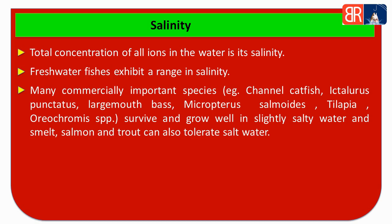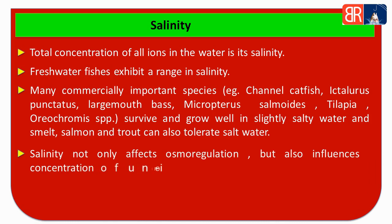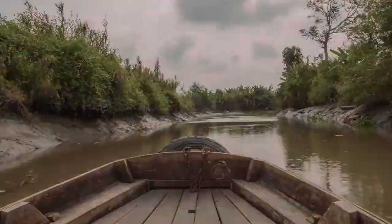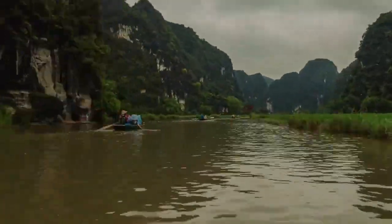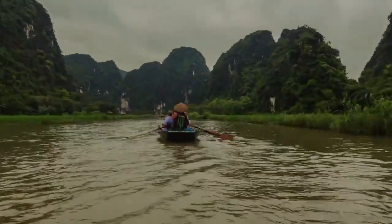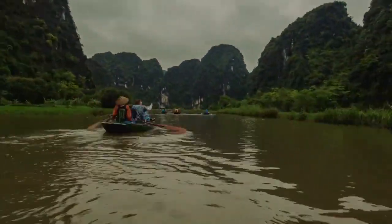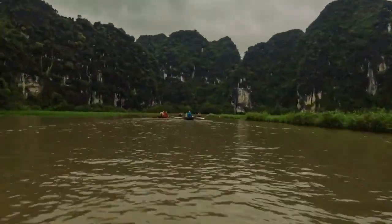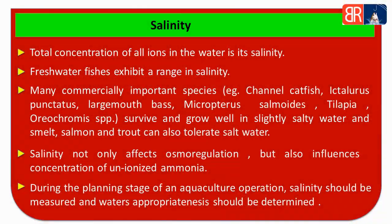But some fishes like salmon and trout can also tolerate salt water. Salinity not only influences osmoregulation but also influences the concentration of unionized ammonia. Therefore, salinity should be measured at the planning stage of aquaculture, and the appropriateness of the water should also be determined. Thank you.